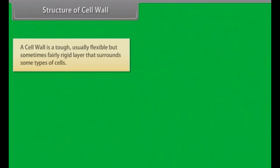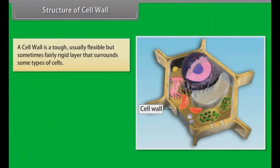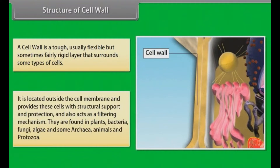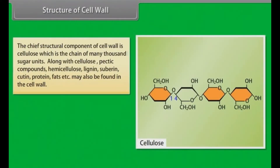Structure of cell wall. A cell wall is a tough, usually flexible but sometimes fairly rigid layer that surrounds some types of cells. It is located outside the cell membrane and provides these cells with structural support and protection, and also acts as a filtering mechanism. They are found in plants, bacteria, fungi, algae, and some archaea. Animals and protozoa do not have cell walls.